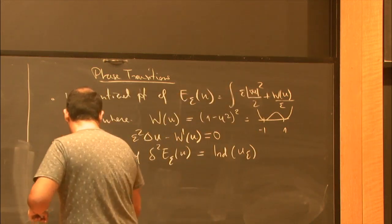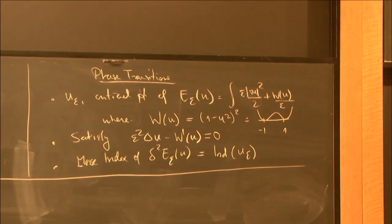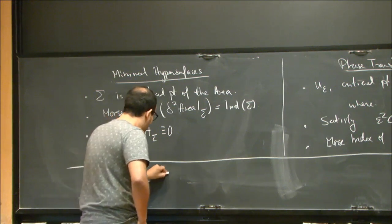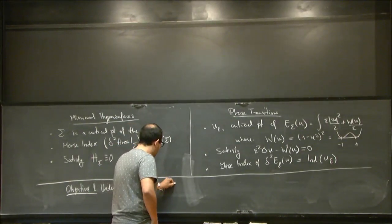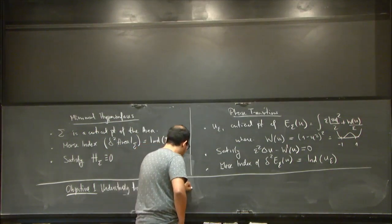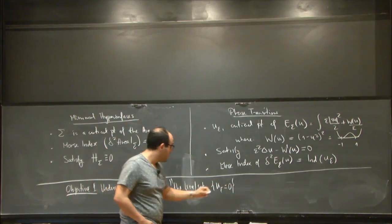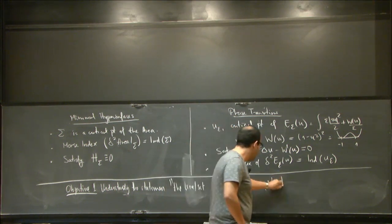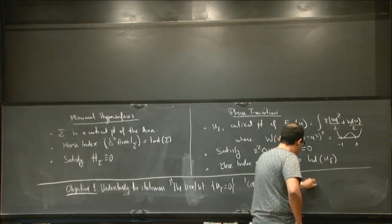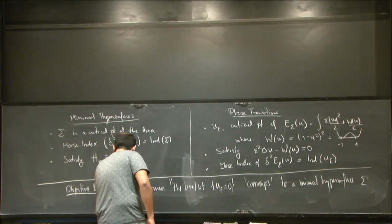So in this setting, the objectives of the thing that I have done and many other people have done could be summarized in the following. So objective one, understanding the statement, the level set, so this is the statement, u_epsilon equal to 0 of these solutions, converges, and here I'm going to put another mark to a minimal surface sigma as epsilon goes to 0.